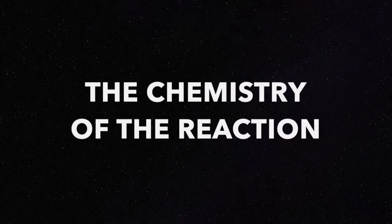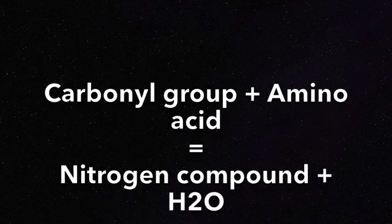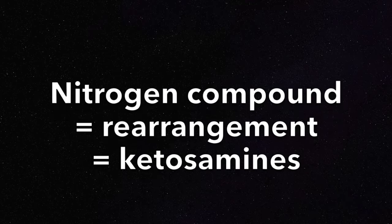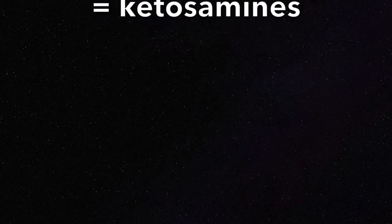The chemical mechanisms of the reaction occur as follows. First, a molecular group formed from a carbon atom and an oxygen atom, known as a carbonyl group in organic chemistry, reacts with an amino acid, producing a nitrogen-containing compound and water. Next, this nitrogen compound undergoes a particular rearrangement and forms ketosamines, which is a mix between ketone and amine groups.